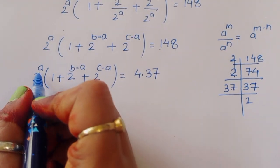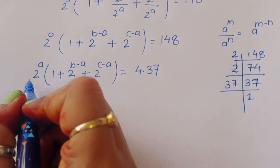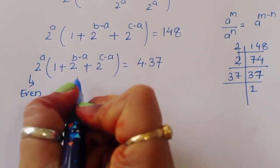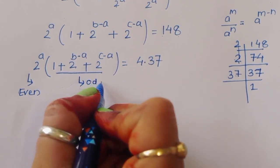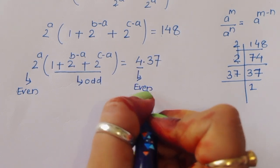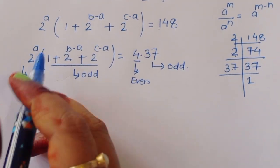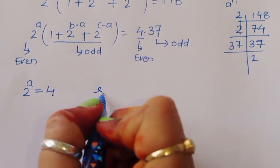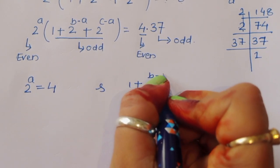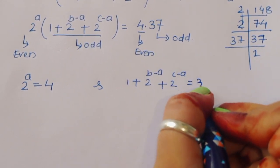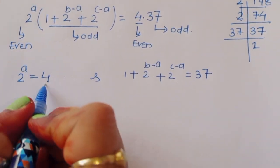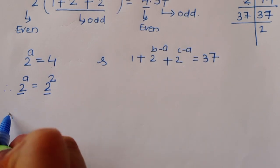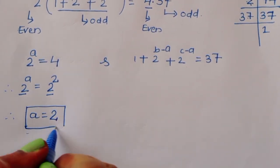If we take a = 1, then 2 power a = 2, which is even. If we take a = 2, then 2 power a = 4, which is also even. Since 4 is even and 37 is odd, we compare even with even and odd with odd. Therefore 2 power a = 4 = 2 squared, so a = 2.